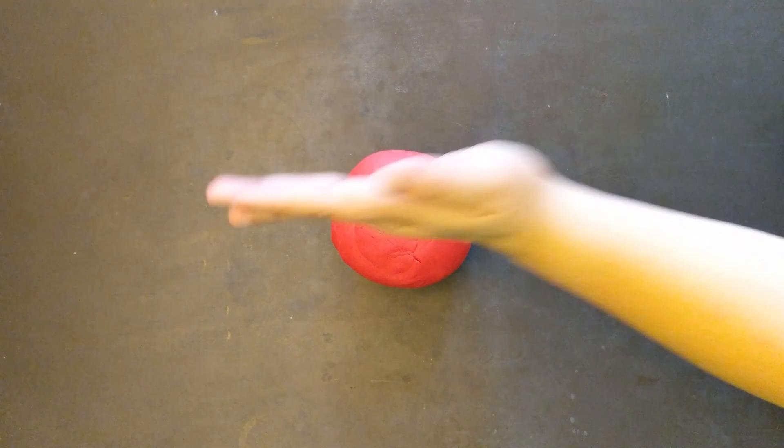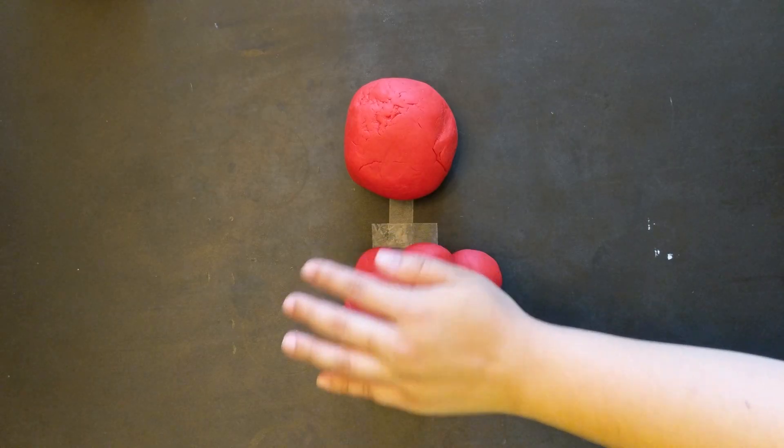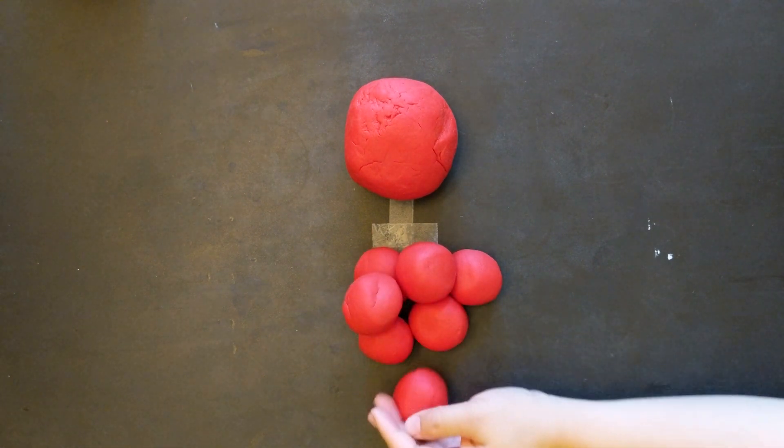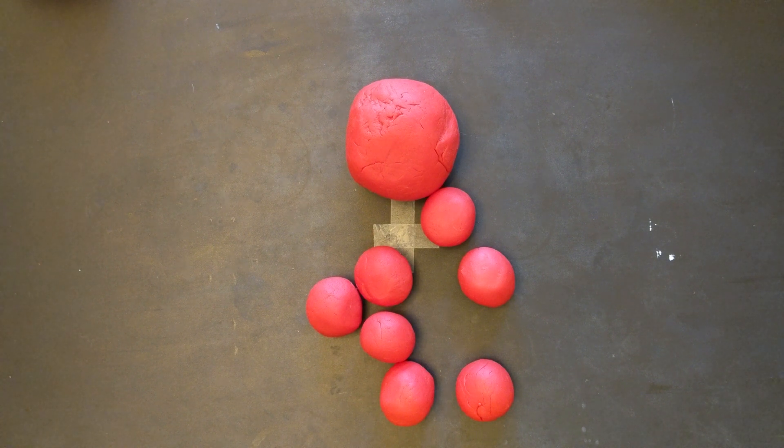First, you need to divide your dough in half. Then you need to divide one half into seven equal spheres. The half you have left over is going to actually represent the earth. So go ahead and put that off to the side.